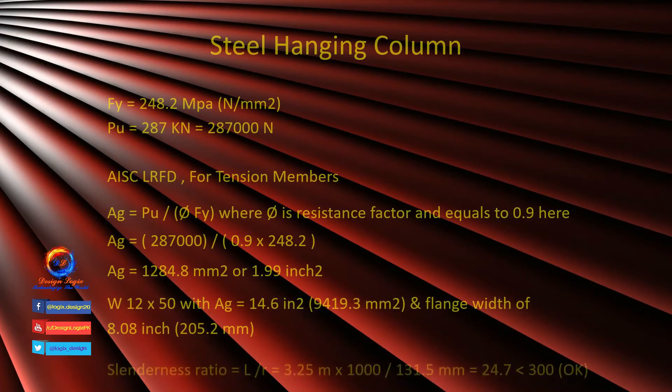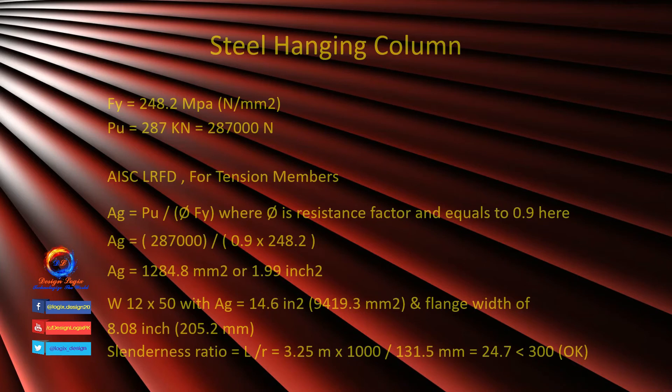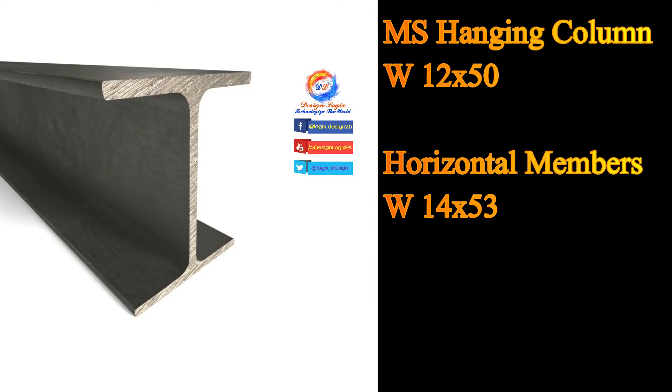Check the slenderness ratio of the column as a tension member: L divided by r. Column length L is 3.25 m divided by the radius of gyration r, giving 131.5 mm, which equals 24.7. This is less than 300, so the section is okay for slenderness ratio. Therefore, W12×50 is the steel hanging column to support the horizontal members of W14×53.